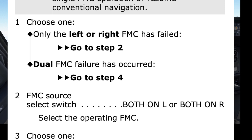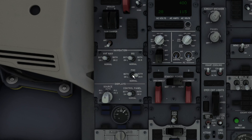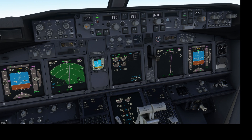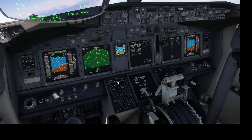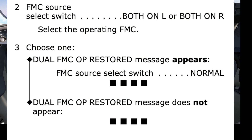Step one — choose one. Only the left or right FMC has failed. That's true, go to step two. Step two: FMC source select switch — both on L or both on R, selecting the operating FMC. Switching to both on the right FMC. Got my FMC back. Selecting VNAV and LNAV. Step three: dual FMC operation restored message appears. It didn't. Dual FMC operation restored message does not appear. It didn't. End of FMC fail checklist.